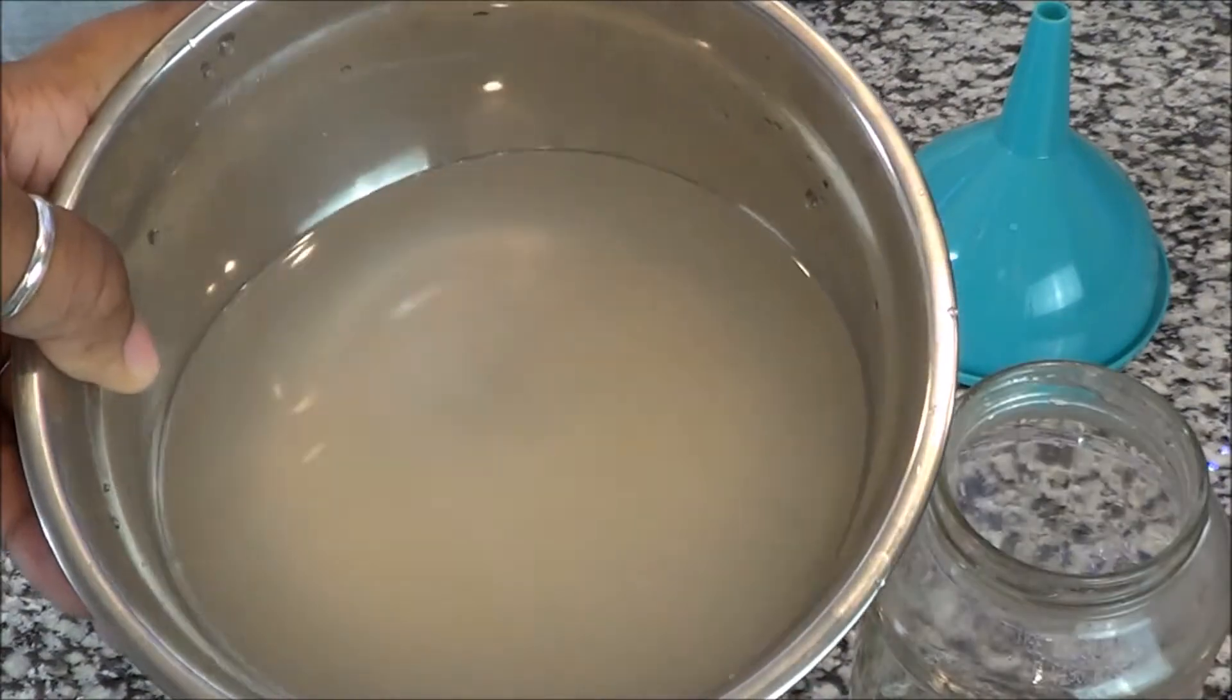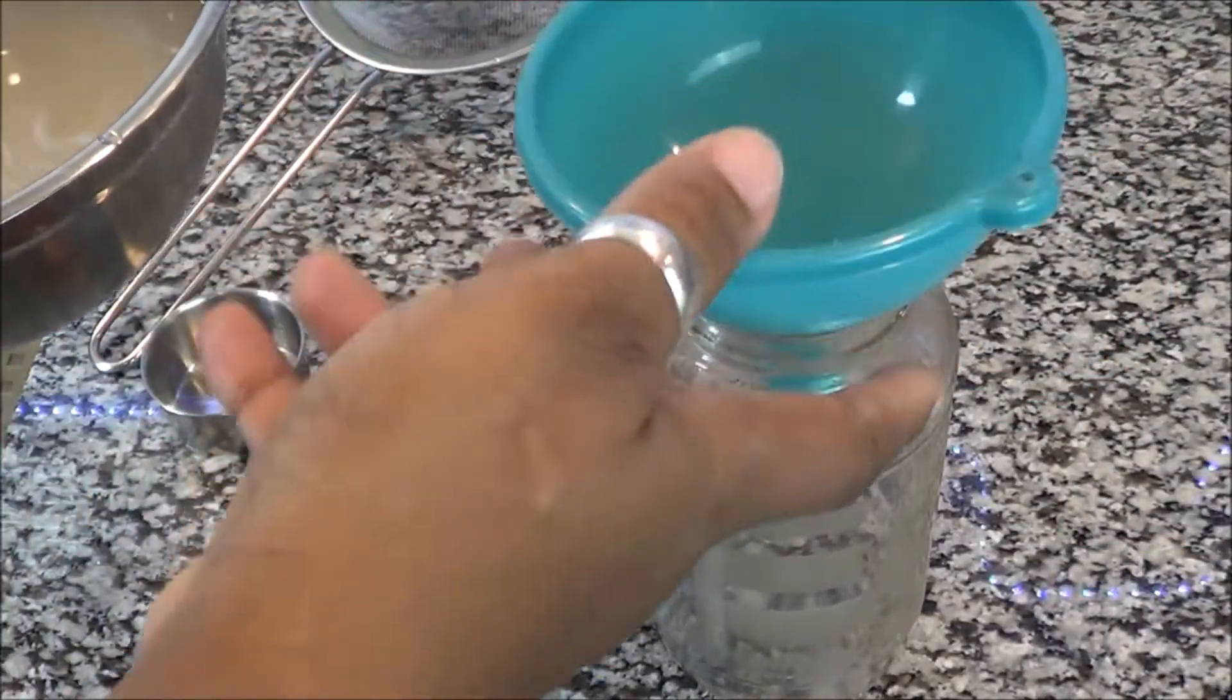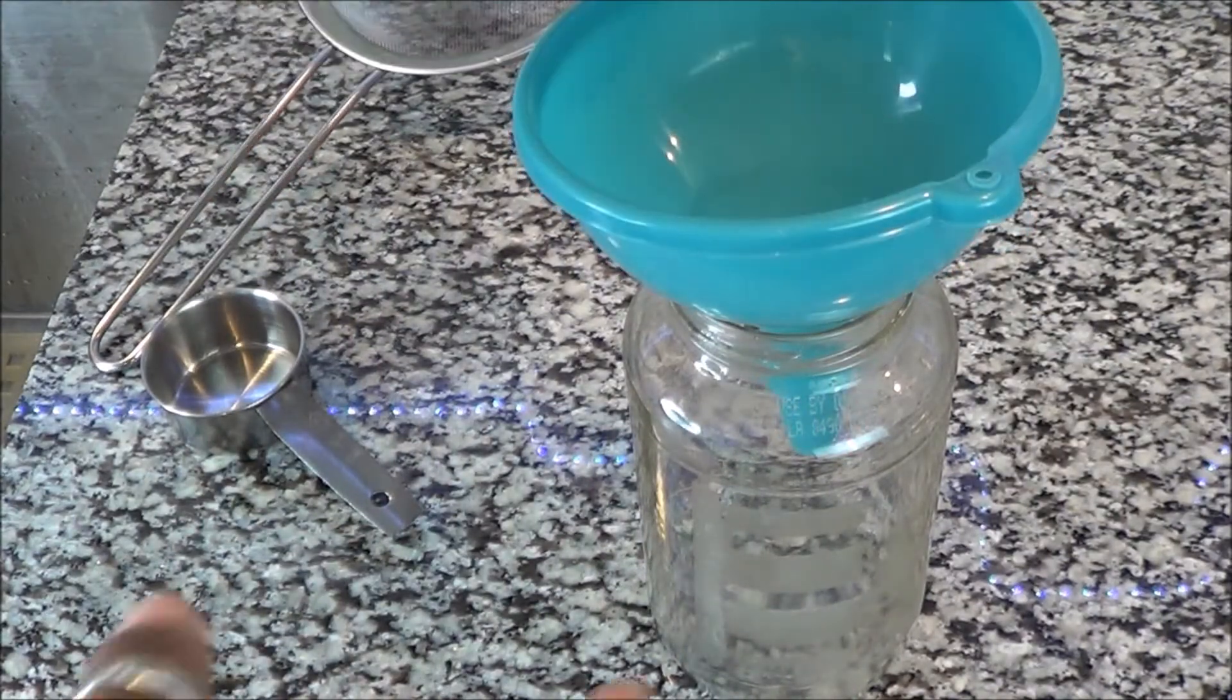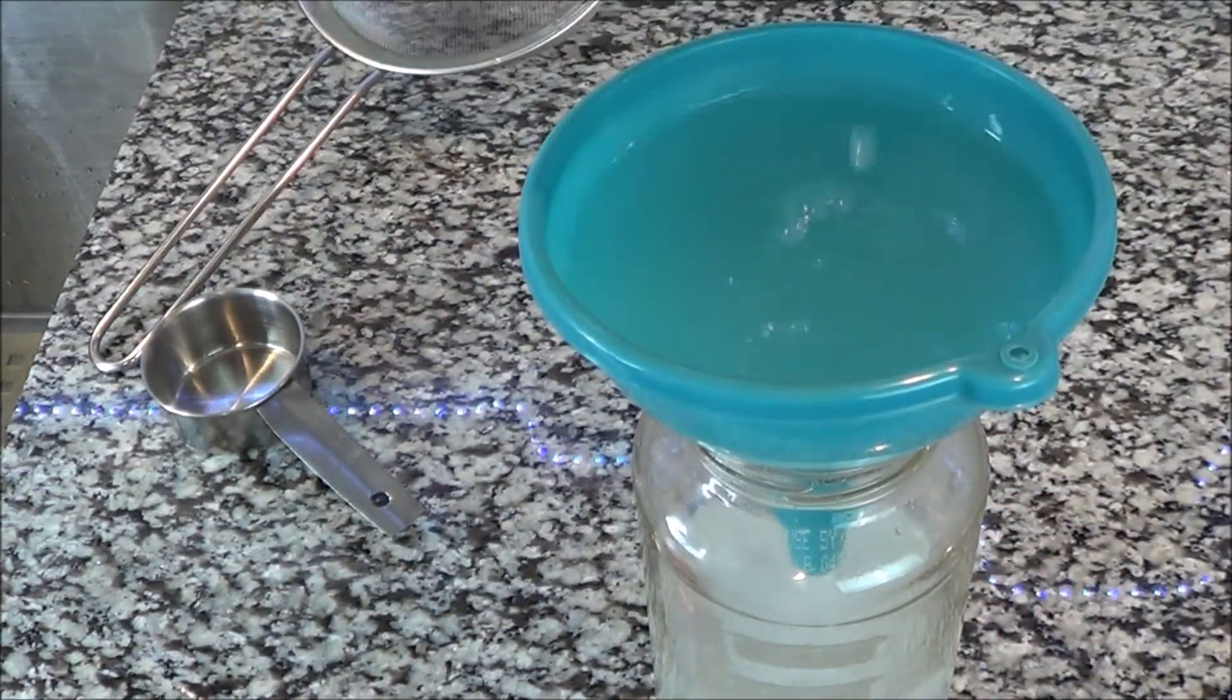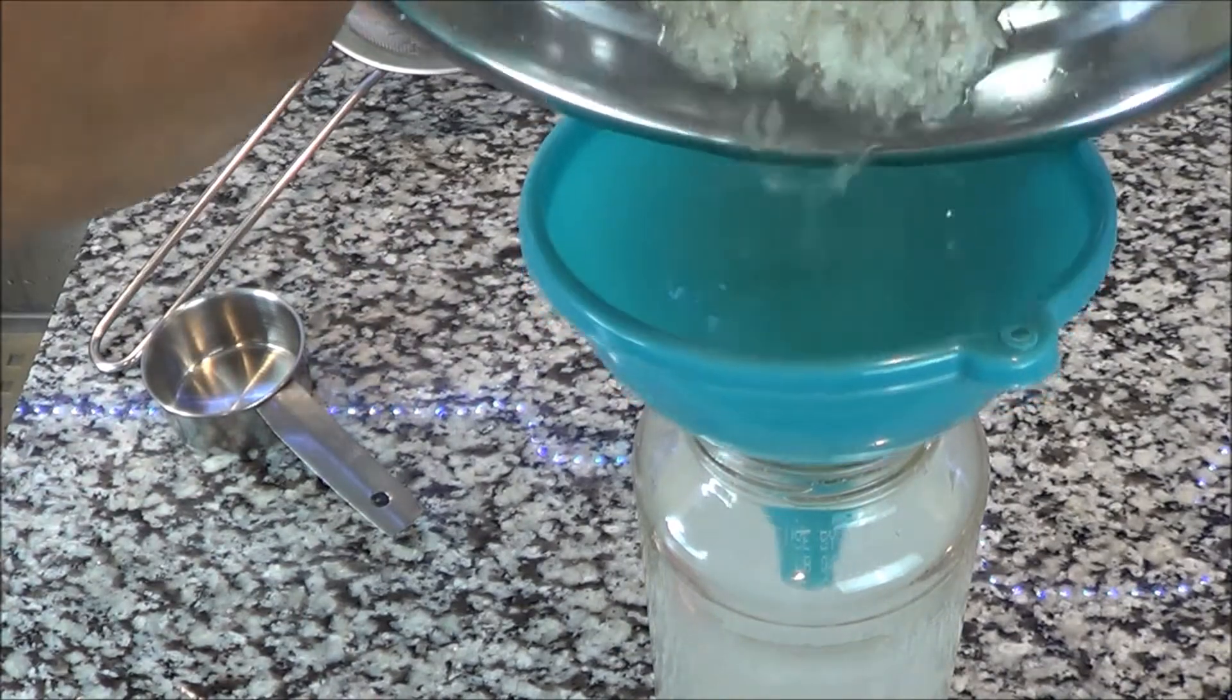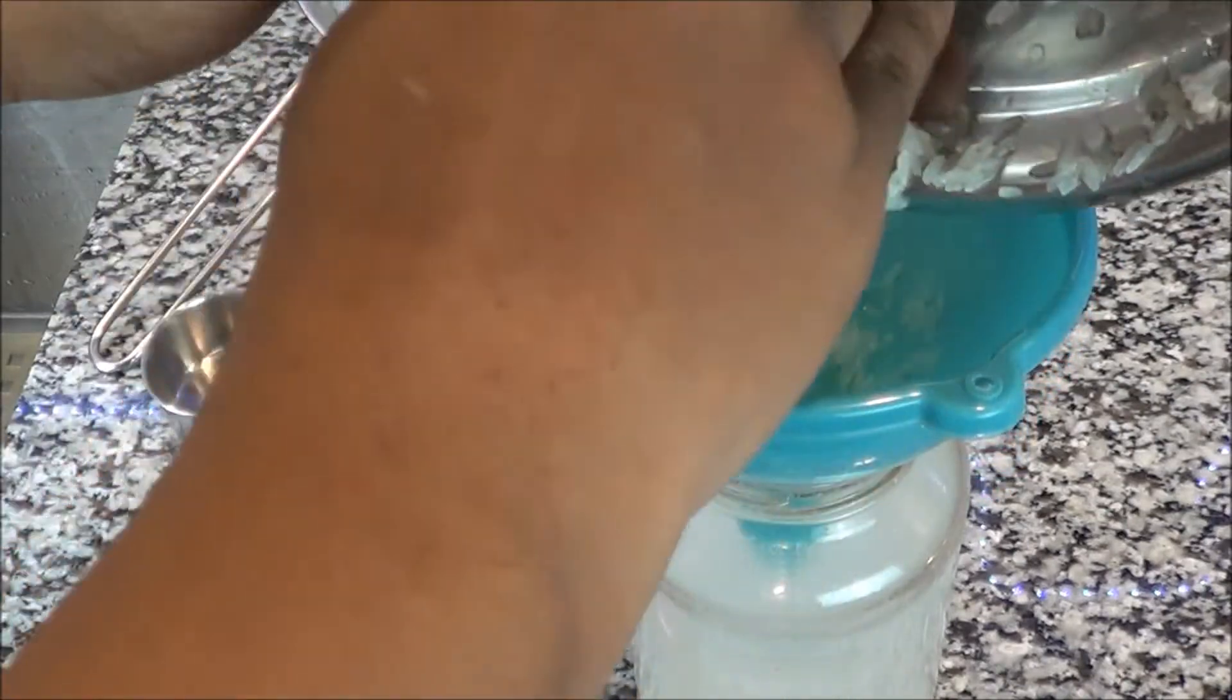The funnel is going to ensure that I get all the goodness back into the glass jar. Guys, this is very simple, it's not difficult. You can use the rice of your choice. If you want to go organic you can, if you want to go with wild rice you can, if you want to use Dollar Tree rice like I have, you can as well.